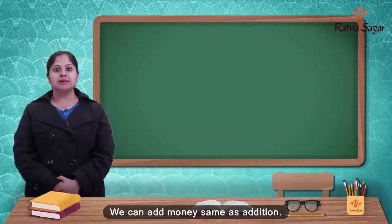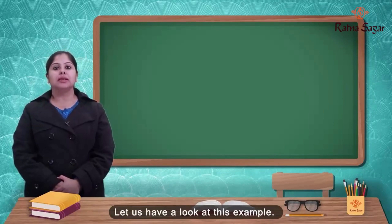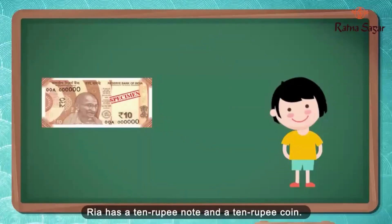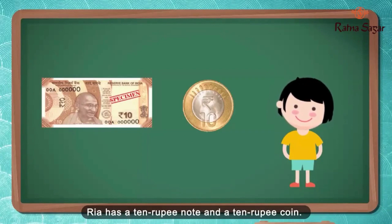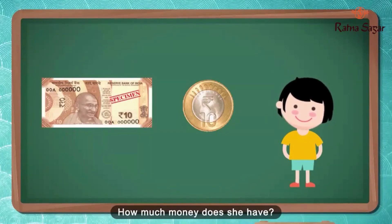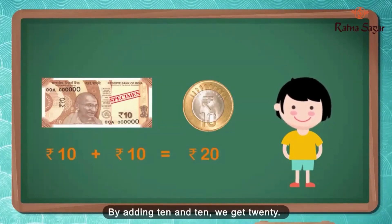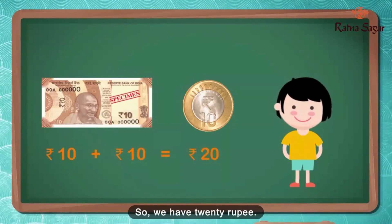We can add money, same as addition. Let us have a look at this example. Rhea has a 10 rupee note and a 10 rupee coin. How much money does she have? By adding 10 and 10, we get 20. So we have 20 rupees.